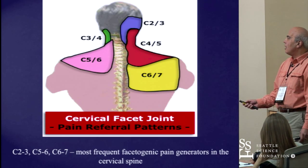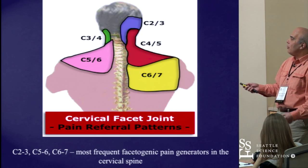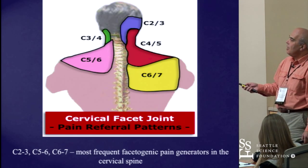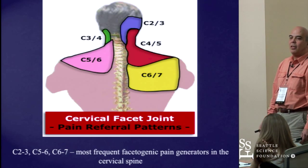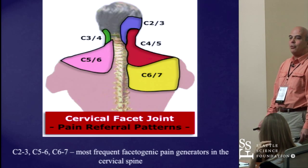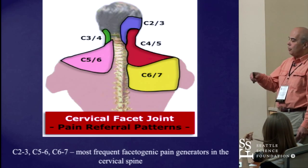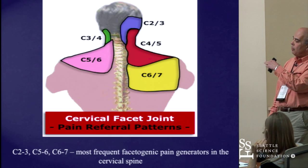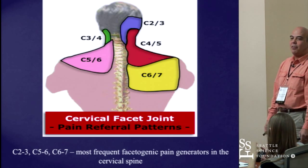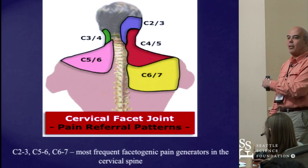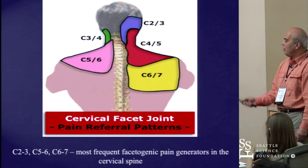What I usually tell trainees — the way to differentiate between one versus the other — is to imagine dividing the shoulder blade or scapula into two halves: mid portion up corresponds to C5-6, and mid portion of the scapula down corresponds to C6-7.